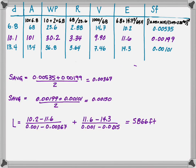Next, we can find the friction slope average between the 6.8 foot and the 10.1 foot location and we get 0.00367. We do it also, the average friction slope, between 10.1 and 13.4 and we get an average of 0.00150.